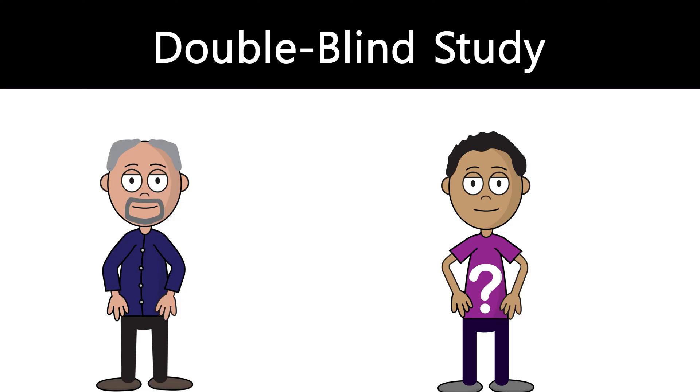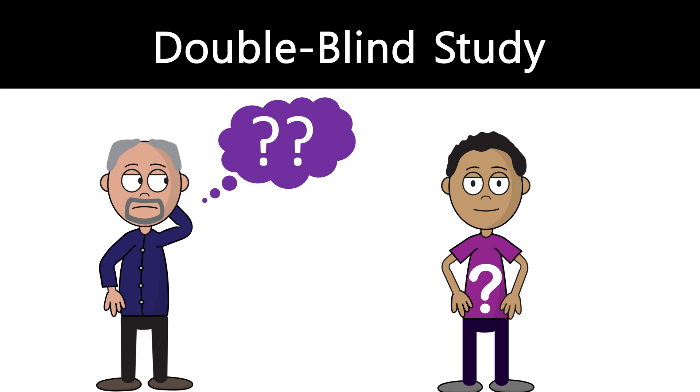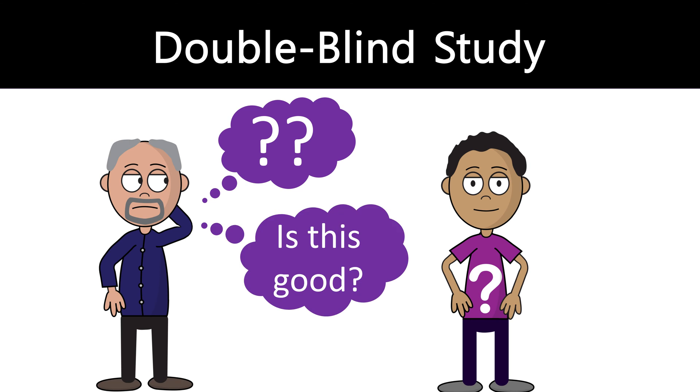Experimenter bias isn't intentional — the researcher isn't aware of influencing the participant; it's just a natural behavior we can't really suppress. There are multiple ways to minimize it, but the main one is to create a double-blind study, where neither the participant nor the researcher knows what experimental condition the participant has been assigned to. Another strategy is to standardize the research protocol beforehand so the procedure is identical for all participants, which also eliminates a whole range of other biases and reduces general variance.